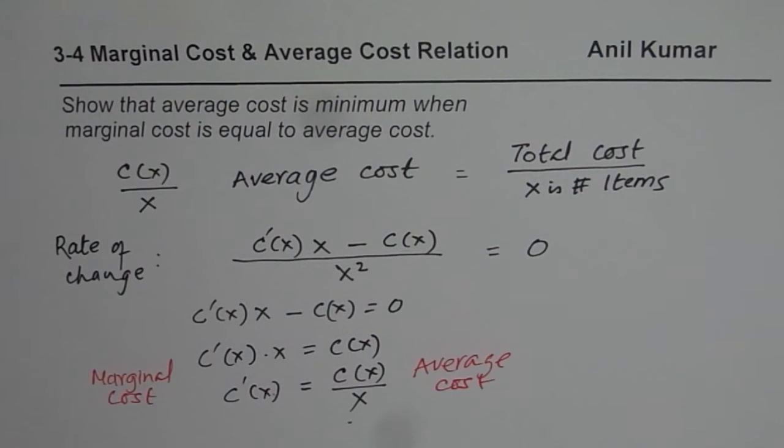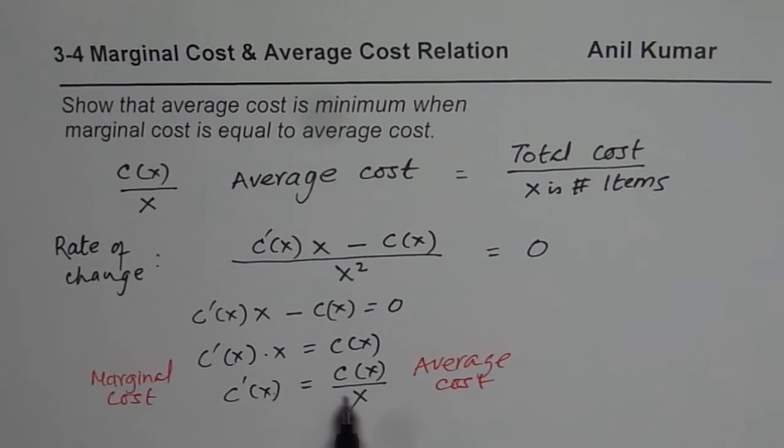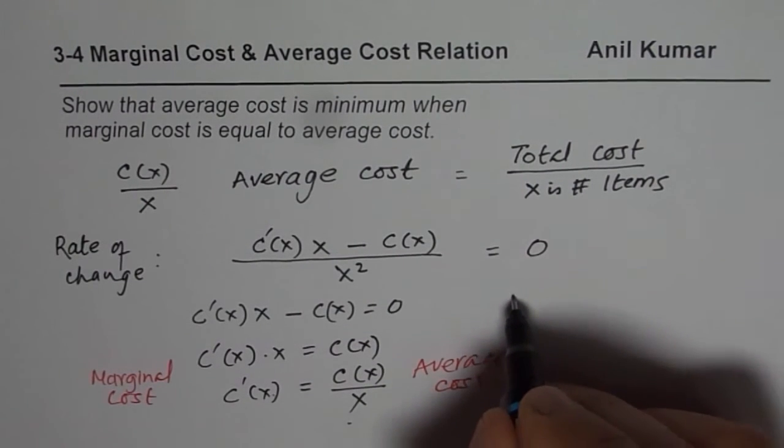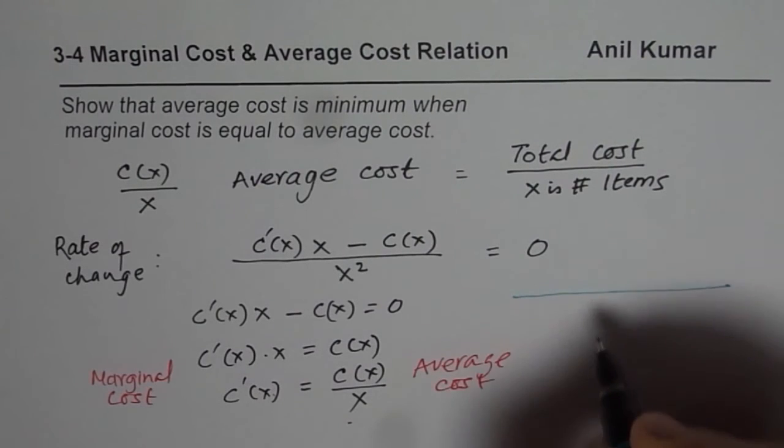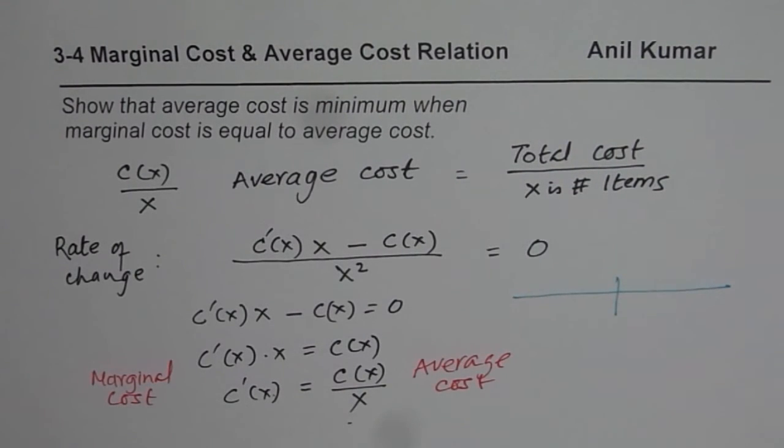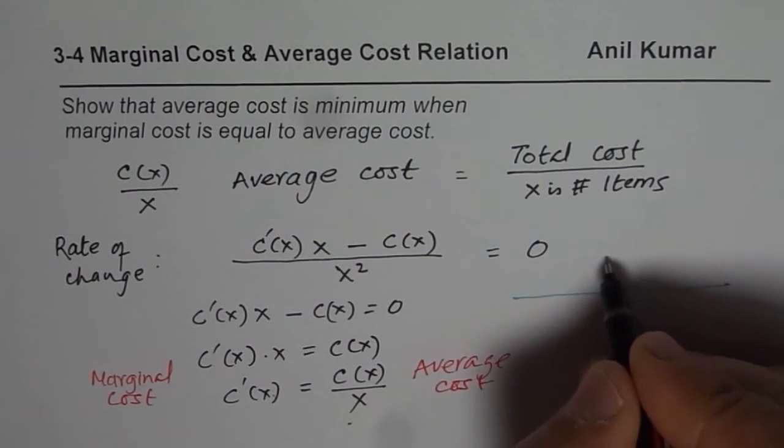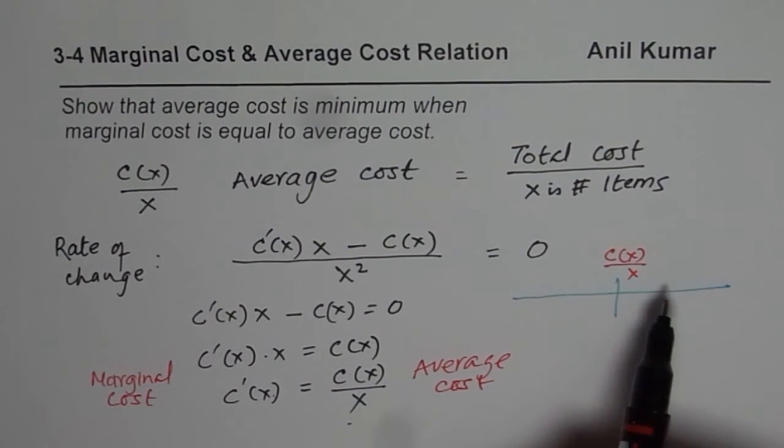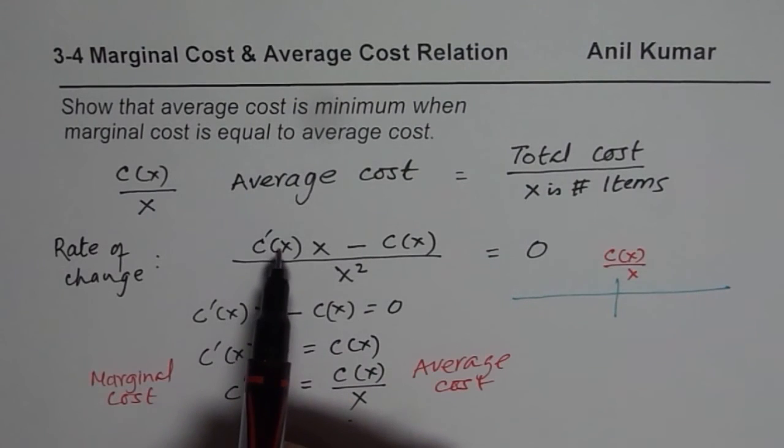Now, you can always test whether it is negative or positive. Now, if we take a function which has c'(x), which is less than this value, so we can test this out, whether it is minimum or not. So what we will do here is, so our critical value here is c(x) over x.